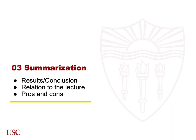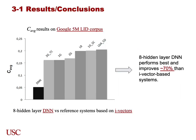The last part is summarization. This figure shows the average cost result on the Google 5M LID corpus dataset. From this bar chart, we can clearly see the performance of the hidden layer DNN versus the reference systems based on iVectors. The black bar shows the performance of DNN, and the gray ones are all for iVector-based systems. We can conclude that the 8 hidden layer DNN performs best and improves around 70% over the iVector-based systems.